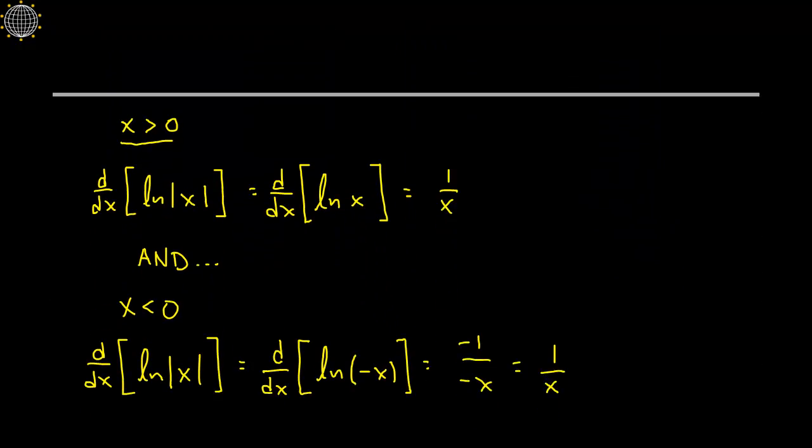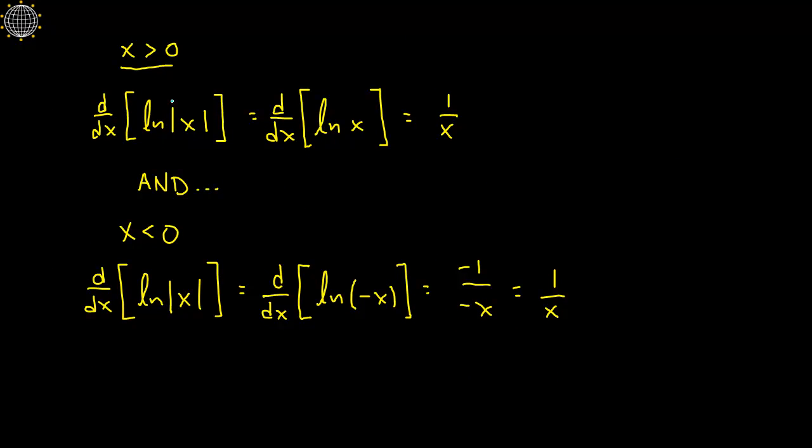So let me show it to you in a little bit more algebraic light. Let's break it down this way. For the x's that are greater than zero, if you're going to take the derivative of the natural log of the absolute value of x just to see if it gives you 1 over x, well, if the x's are already positive then the absolute value bars are a little bit redundant. If your x's are already positive, you don't need them. And so this would be the same as differentiating just ln(x), which obviously is 1 over x. So for positive x's we are good.